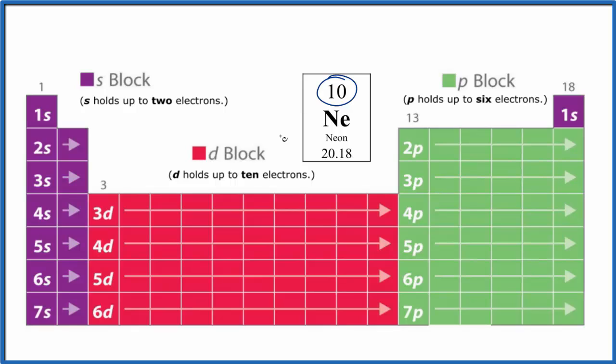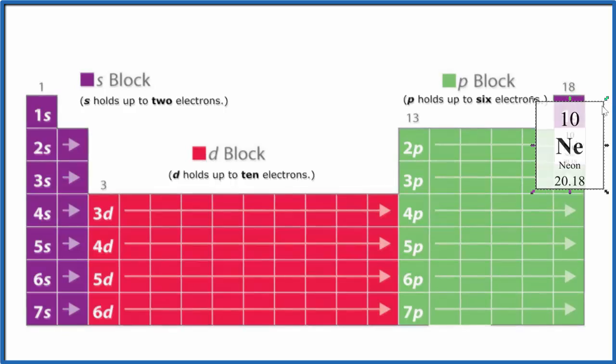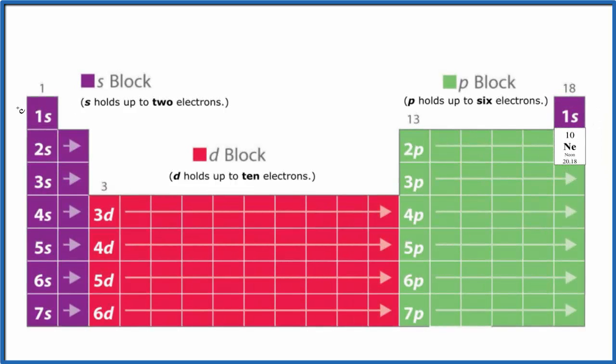Because it's a neutral element, like all elements on the periodic table, number of protons equals electrons. So we have 10 electrons to work with. Neon is right here on the periodic table, so we'll start out in the first energy level.